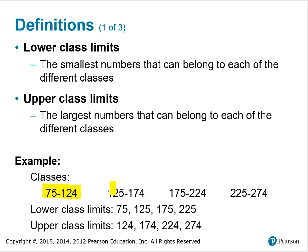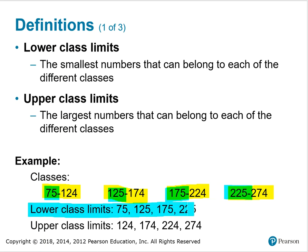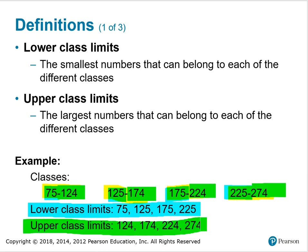In the example shown, we have four classes, listed horizontally here for illustrative purposes. The lower class limits — the smaller numbers that belong to each class — are 75, 125, 175, and 225. The upper class limits — the largest numbers in each class — are 124, 174, 224, and 274.